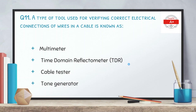Question 11: a type of tool used for verifying correct electrical connectors of wires in a cable is known as — options are multimeter, time domain reflectometer (TDR), cable tester, and tone generator. The correct answer is again cable tester.